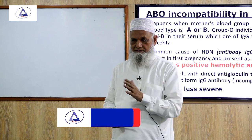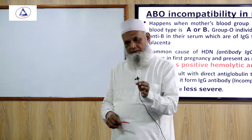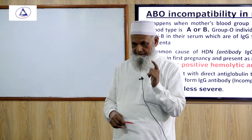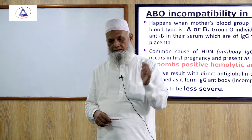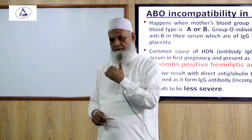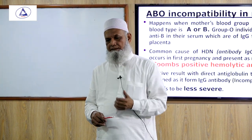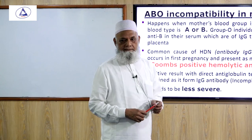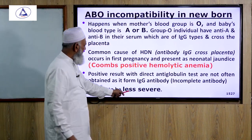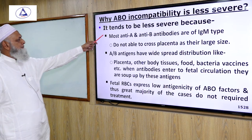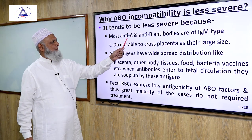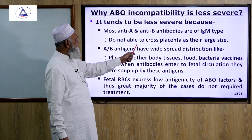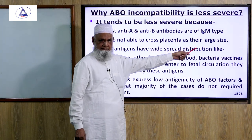Although IgG anti-A and anti-B antibodies can cross the placenta and cause some destruction, this tends to be less severe. This is because most naturally occurring anti-A and anti-B antibodies are of IgM type, and due to their larger molecular size, they are not able to cross the placenta.